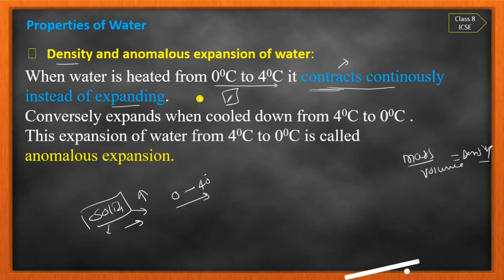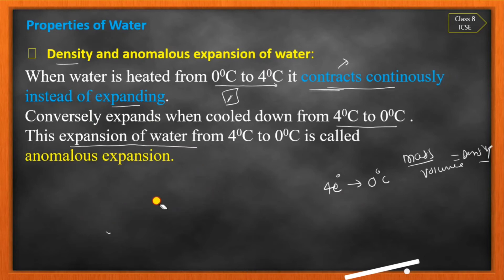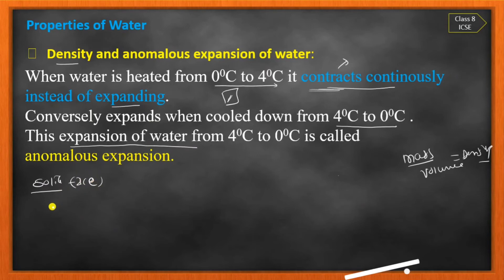As per normal nature, when heated water should expand, but it contracts from zero to four degrees. And when cooled from four degrees to zero degrees, instead of contracting, it expands. This opposite behavior is called anomalous expansion. Water in solid state is ice — at zero degree Celsius.